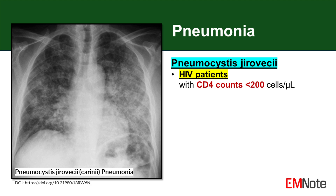PJP typically presents with a subacute onset of dry cough, progressive dyspnea, and hypoxemia, often with minimal findings on chest auscultation despite significant radiographic abnormalities.